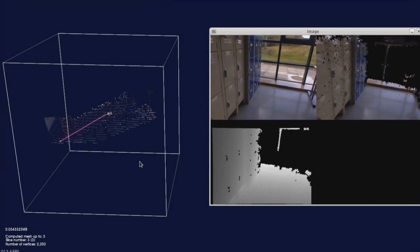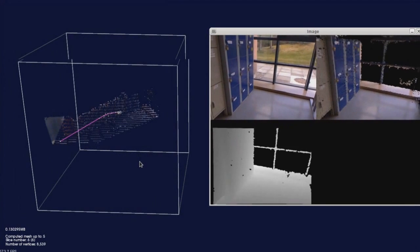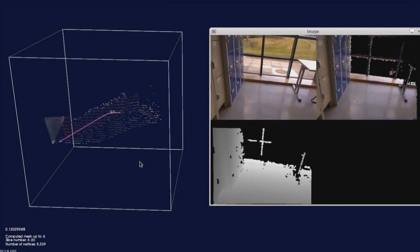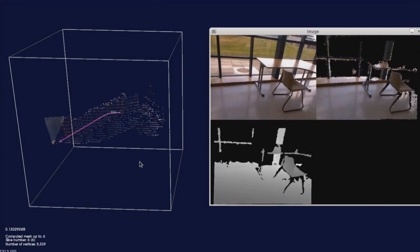The cube to the left of the images represents the current location of the Kinect Fusion volume in space, where we can see the motion of the cube as the camera moves.